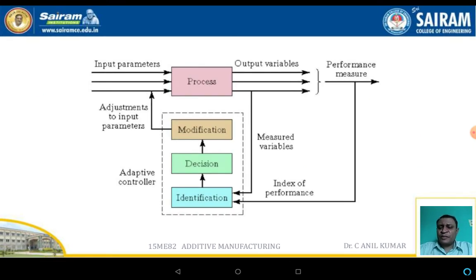The schematic diagram shows the adaptive control system. In this, the modification, decision, and identification are additional parameters that are adopted in the process.